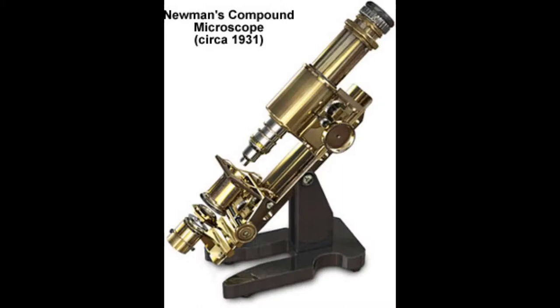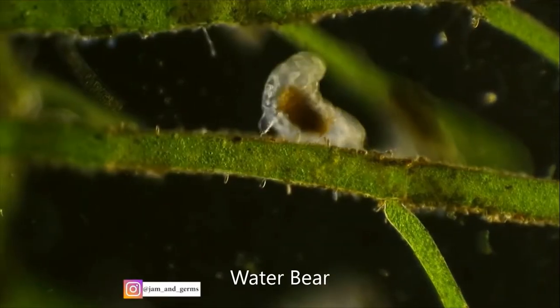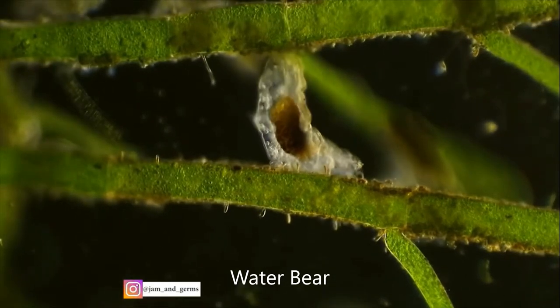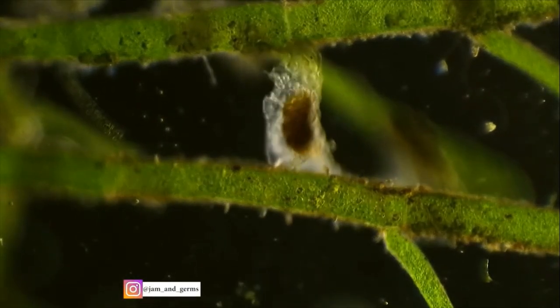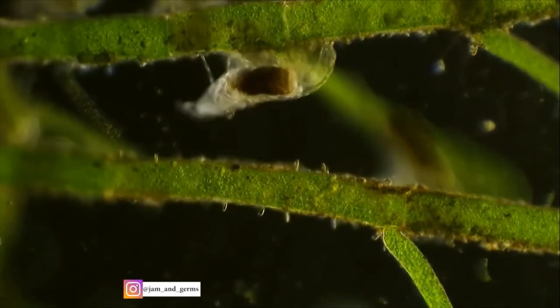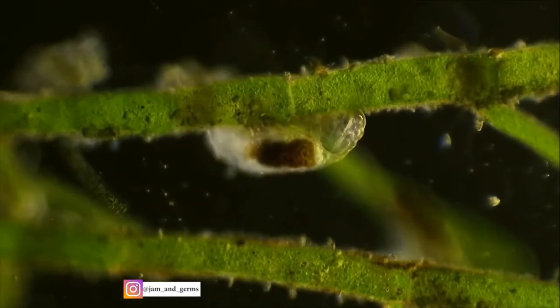Others have focused on seeing things very close up — this is the idea that has brought about our modern-day microscope. Microscopes allow us to see things more closely than our naked eye alone, revealing a whole other world that is far too small for the human eye to detect, like bacteria, plankton, and different cells. In fact, some microscopes can even look at things many times smaller than that.